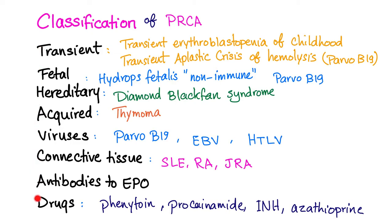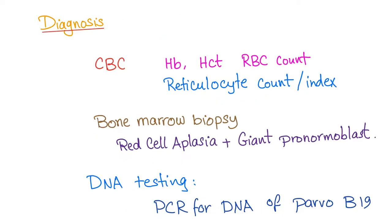If we do not know the reason, we call it idiopathic. Pay attention — Parvovirus B19 is a big deal across multiple categories. Quick question: is Parvovirus B19 a DNA virus or an RNA virus? Please let me know down in the comments.